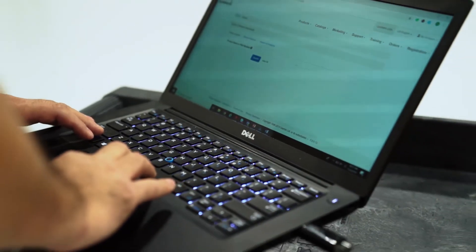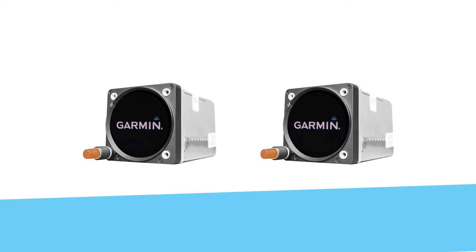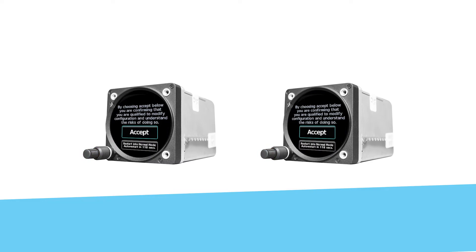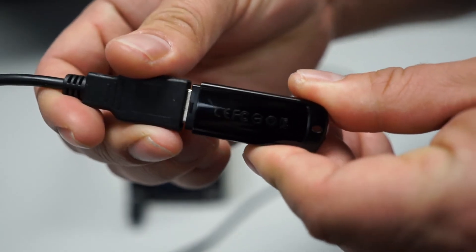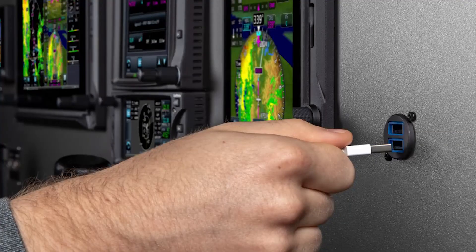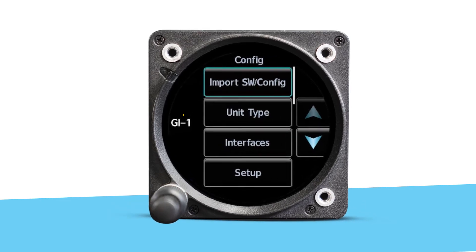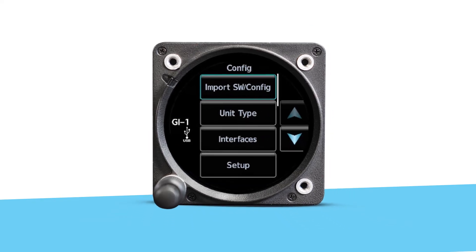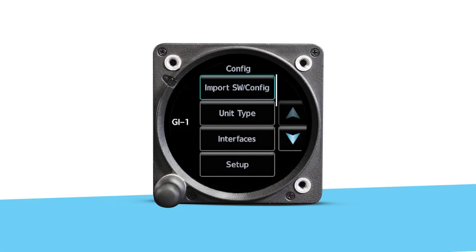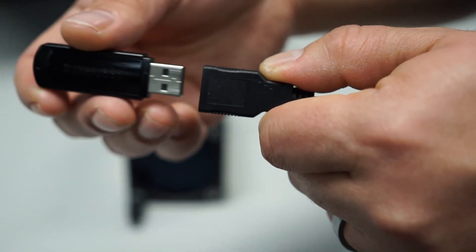Once your USB drive is loaded with the correct software, you're ready to start the update. Make sure all your units are powered on and entered into configuration mode. Insert the USB device with the correct software into the USB dongle or GSB15 connector. A USB icon will appear on the unit directly connected to the USB port, confirming the USB drive is communicating with the system. If it does not appear after one minute, remove the drive and reinsert it, and wait for the icon to appear.